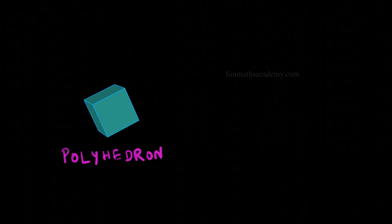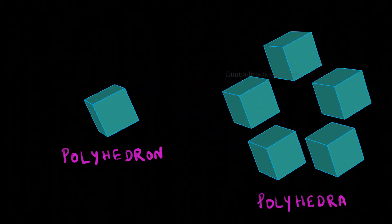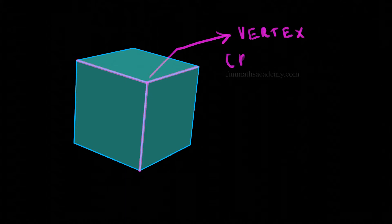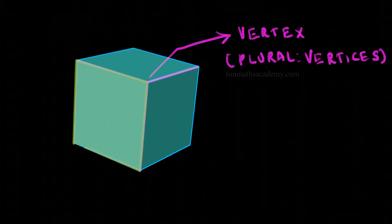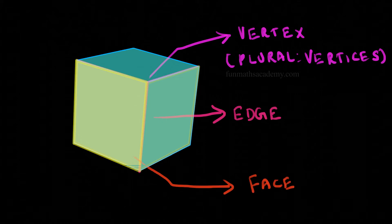Singular is polyhedron and many polyhedrons will be called polyhedra. There are some terms of polyhedron that we should know about. The point where two or more lines meet is called a vertex. The line where two flat surfaces meet is called an edge, and every flat surface on the polyhedron will be called a face.